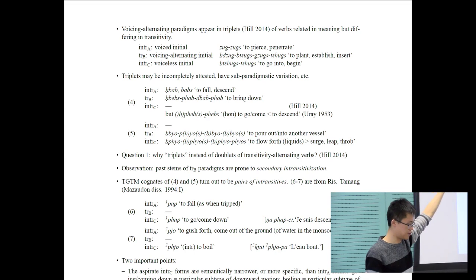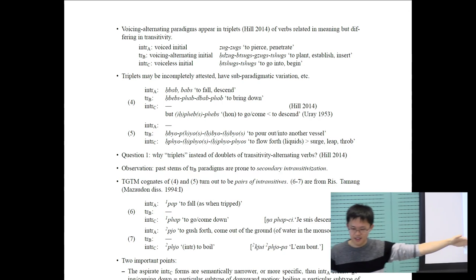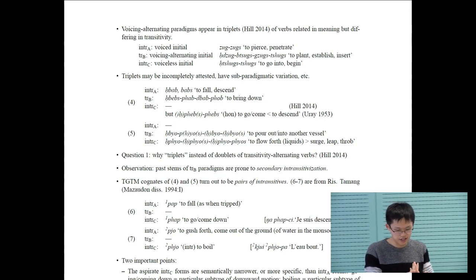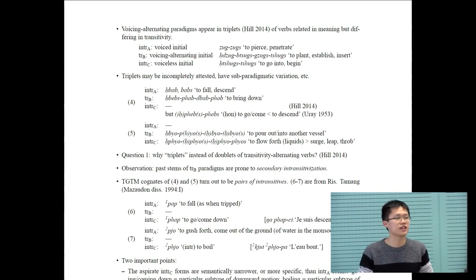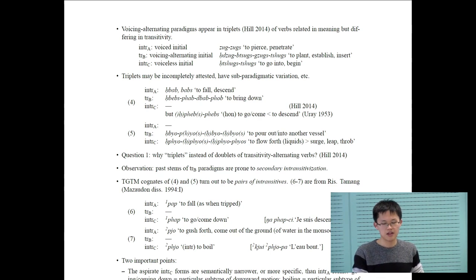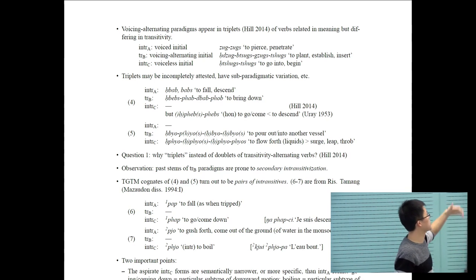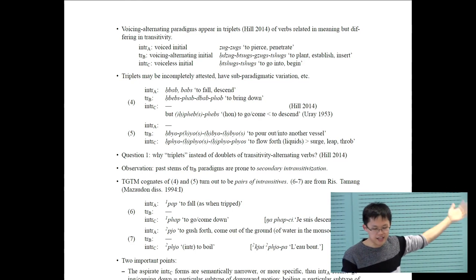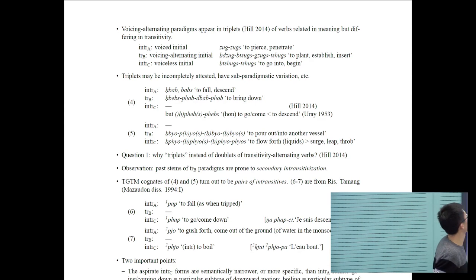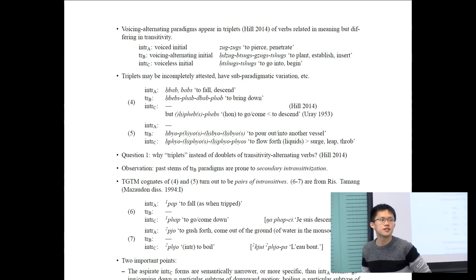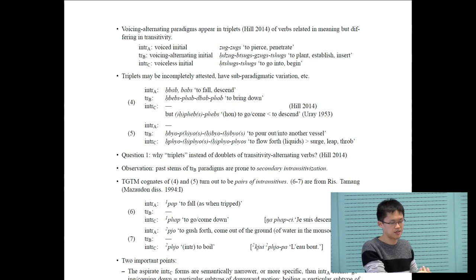Why do you have two intransitives? It requires some explanation. Triplets may be incompletely attested. They might have subparagmatic variation. An example would be to fall: you have an intransitive A with a voiced onset, transitive B with voiced alternating onset to bring down, to make fall. Intransitive C is not attested according to Hill 2014. Two questions: first, why triplets instead of doublets? And second, why do these C intransitives have a voiceless onset?